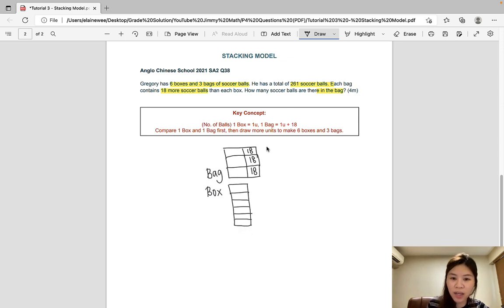Alright, so once this is done, we can fill in the other information. There are 261 balls all together. So now let's take a look at this model. We have equal units here without the extra 18s, right? So in order to just have equal units, let's remove the extra 18s from this equation. So let's go ahead and work that out.